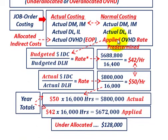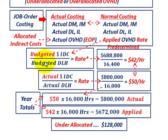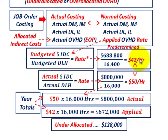The first thing we want to do is calculate our applied overhead rate, or that predetermined overhead rate. We take our budgeted total indirect cost — in this case $688,800 — and divide it by the budgeted total direct labor hours, which we budgeted at 16,400 hours. That gives us a budgeted or predetermined overhead rate of $42 per hour.